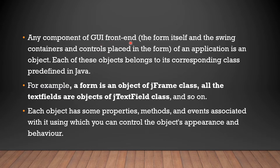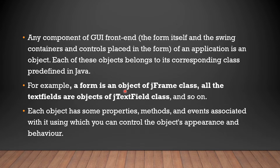Any component of a GUI front end of an application is an object. Each of these objects belongs to its corresponding class predefined in Java. Whenever we select any component in our application, it is an object, and each object belongs to a class that is predefined in Java. For example, a form is an object of the JFrame class. All text fields are objects of the JTextField class. So if we consider JFrame a class, then its object will be a form.